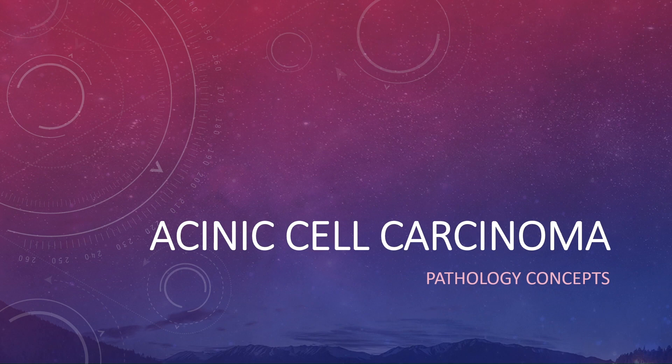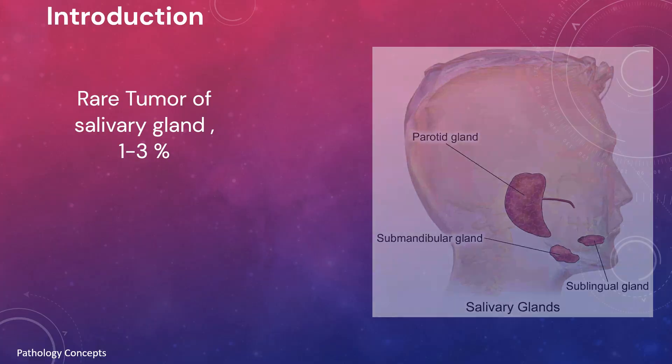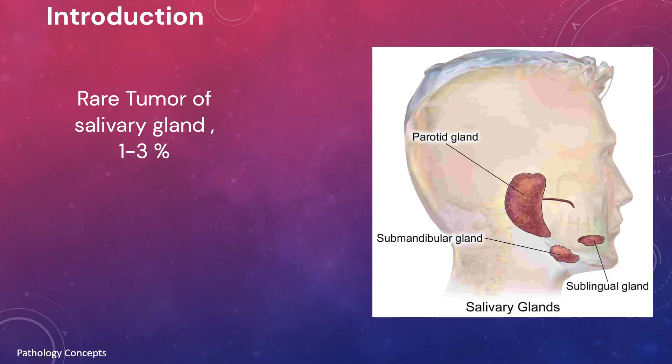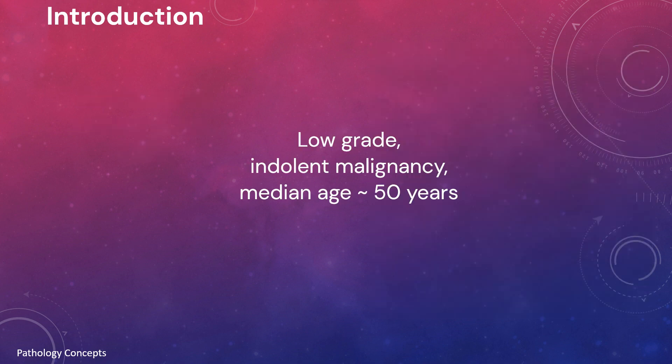Hello and welcome everyone. Today we are discussing acinic cell carcinoma, a rare tumor of the salivary gland, representing approximately one to three percent of all salivary gland tumors. It is a low-grade, indolent malignancy with a median age of representation at around 50 years.